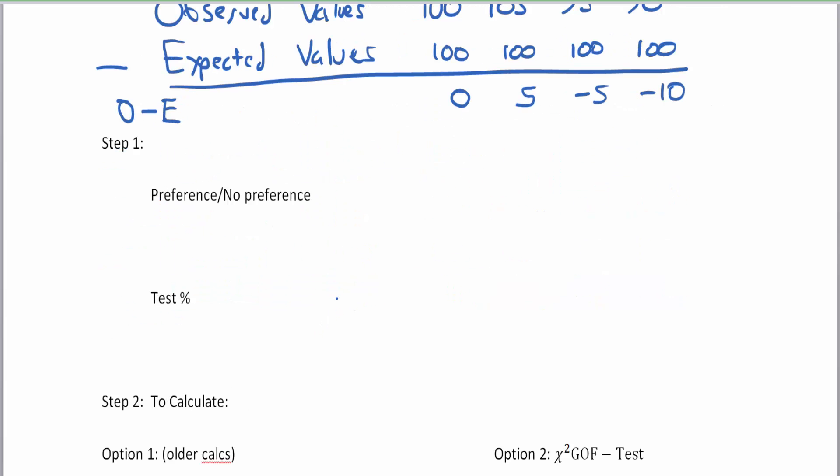Now the second part which is actually our step one is to determine whether this is a preference no preference problem or whether you're testing the percentage and if it fits the population. How do you tell the difference? The key is the word preference. A preference means that out of all the different flavors of soft drinks people would actually want to get one versus the other. If you see the word preference in the problem the null hypothesis is going to be there is no preference. These null and alternative hypotheses are sentences instead of mathematical inequalities with Greek letters.